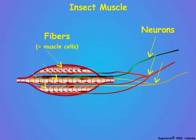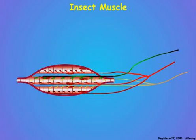However, three fibers and three neurons does not mean that each fiber is controlled by one neuron. The neurons differ in their stimulatory actions on the muscle fibers, and are known as fast, slow, or inhibitory neurons based on their effects on the fibers.